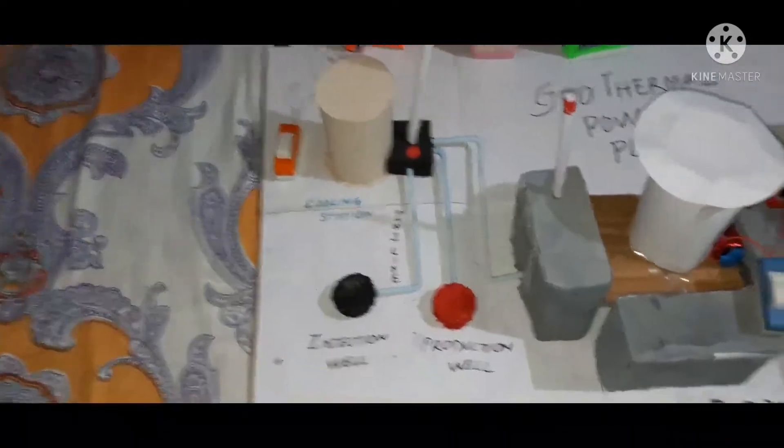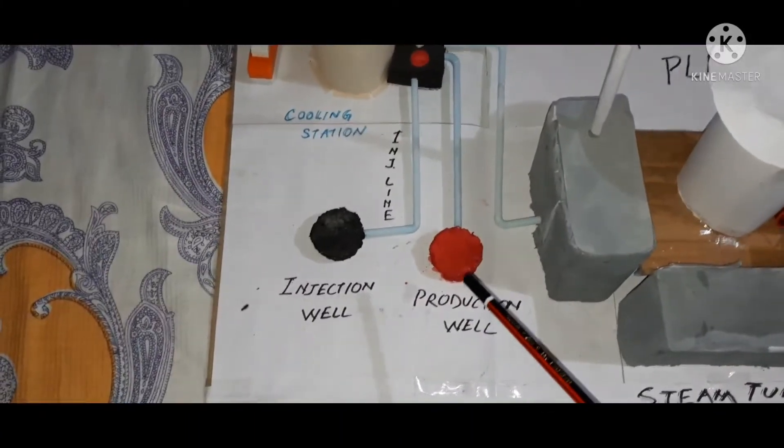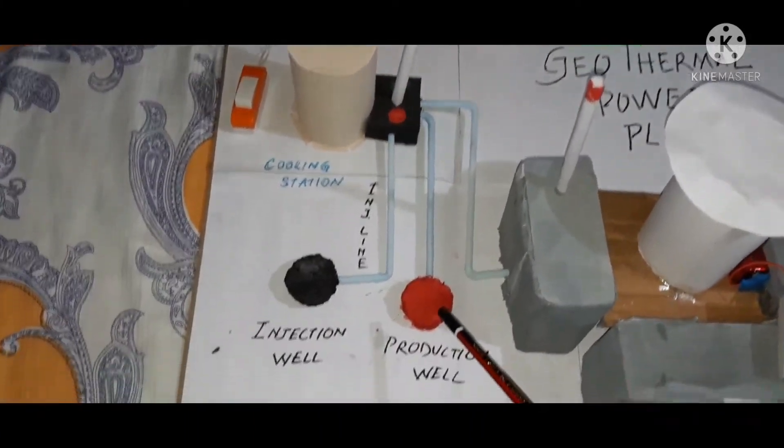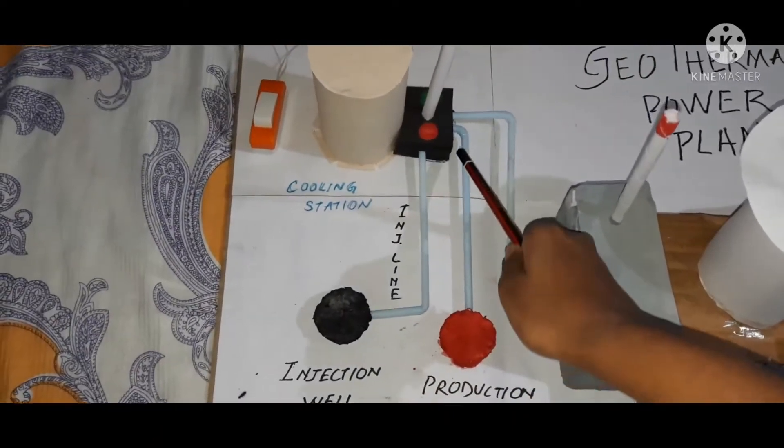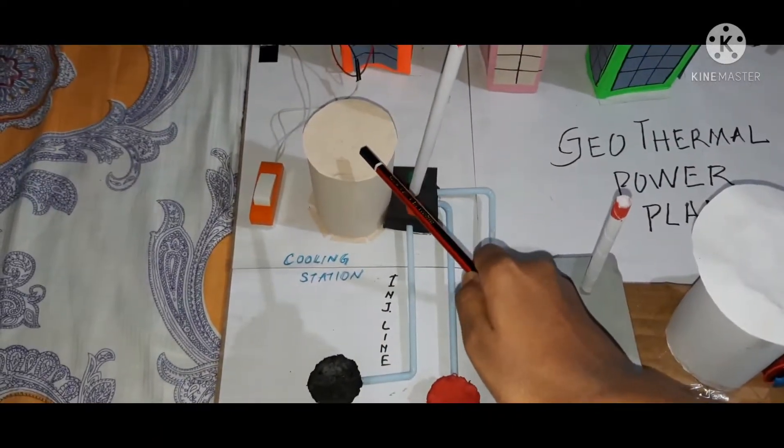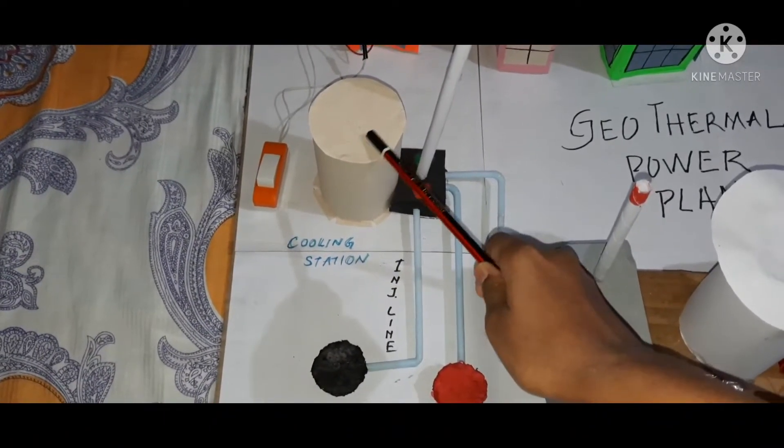First, the hot water is pumped under high pressure through the production well and sent to the cooling station where the pressure is dropped, which causes the water to turn into steam.